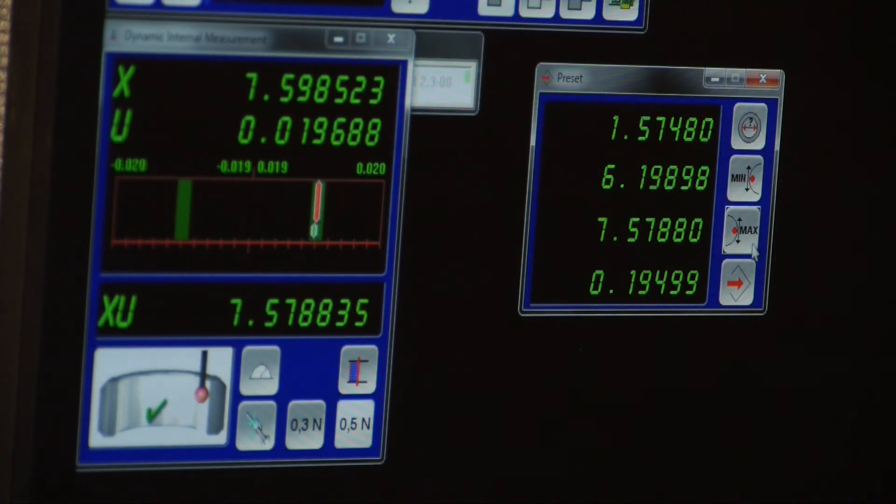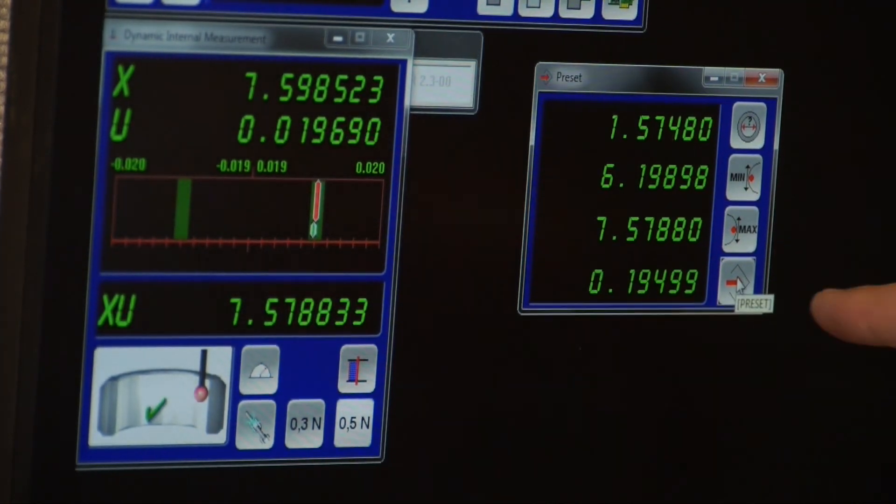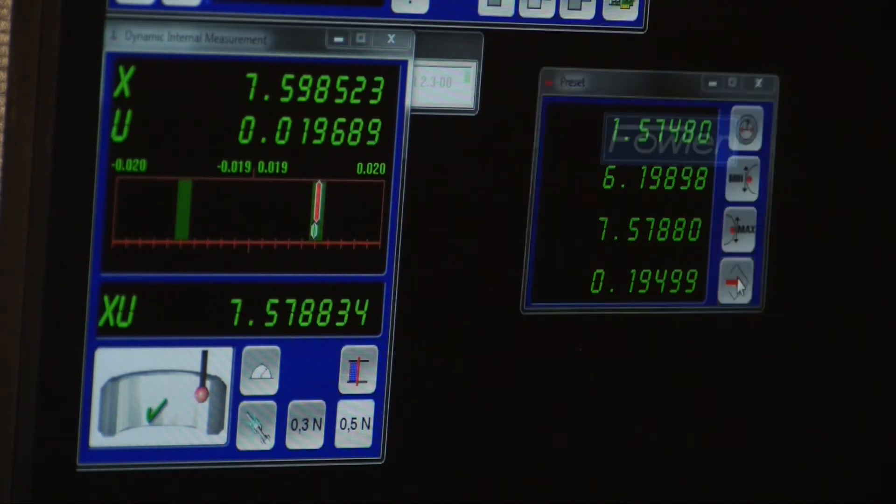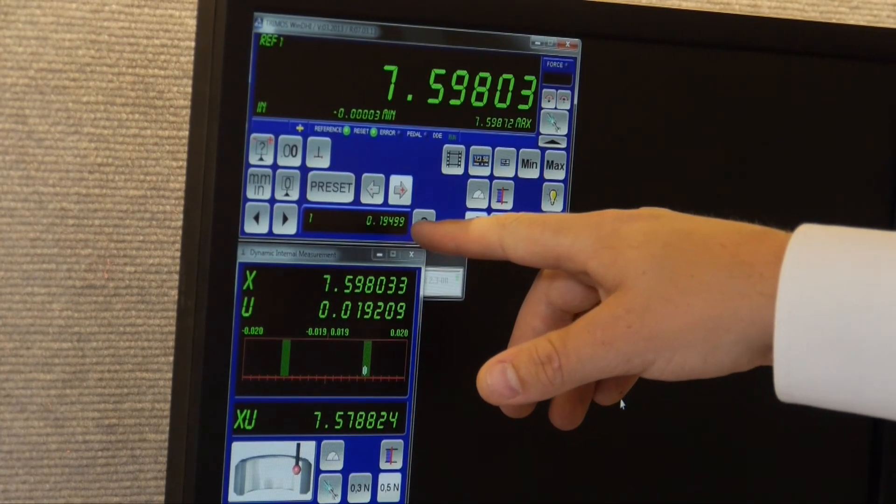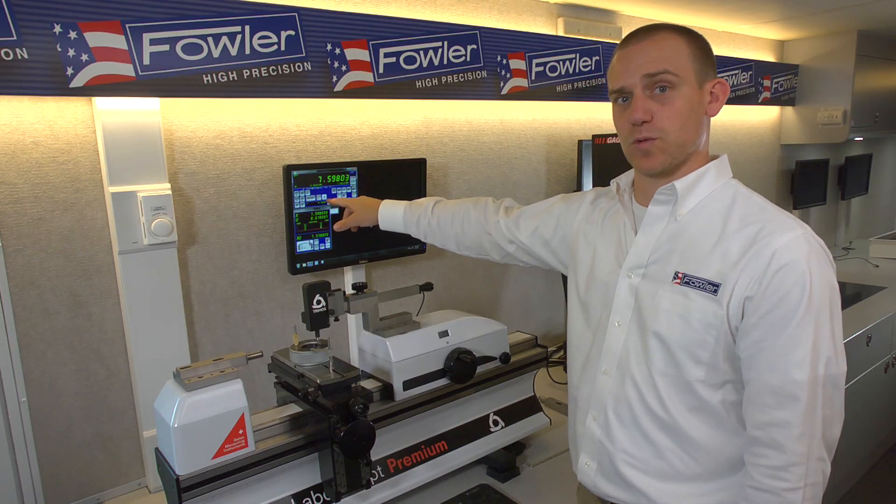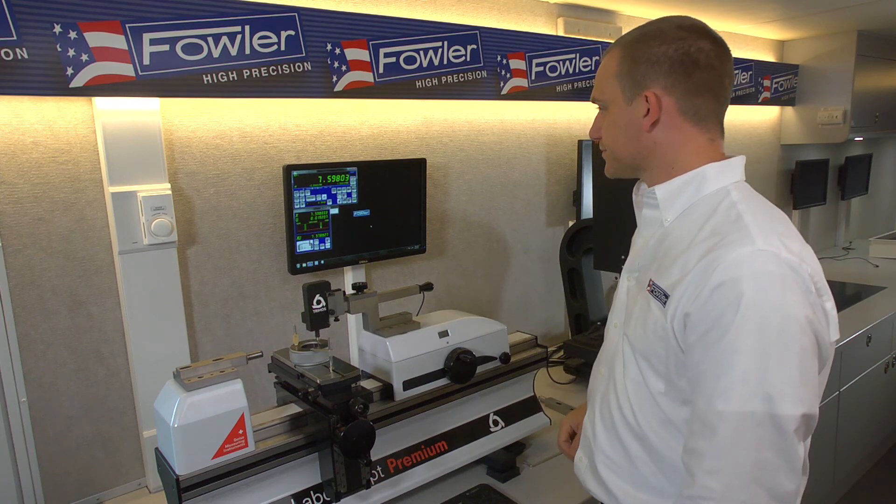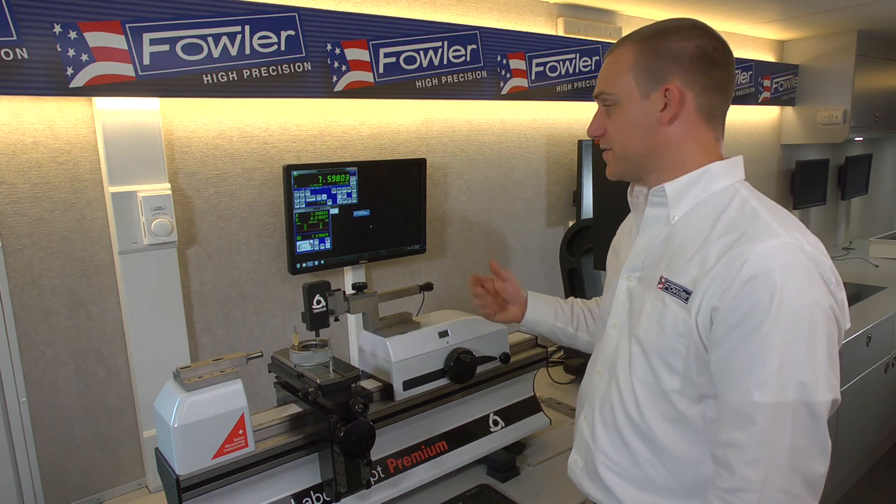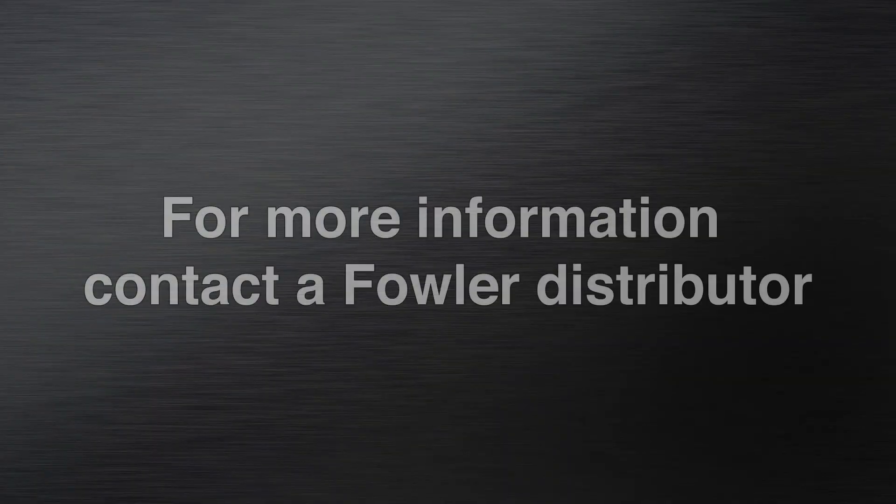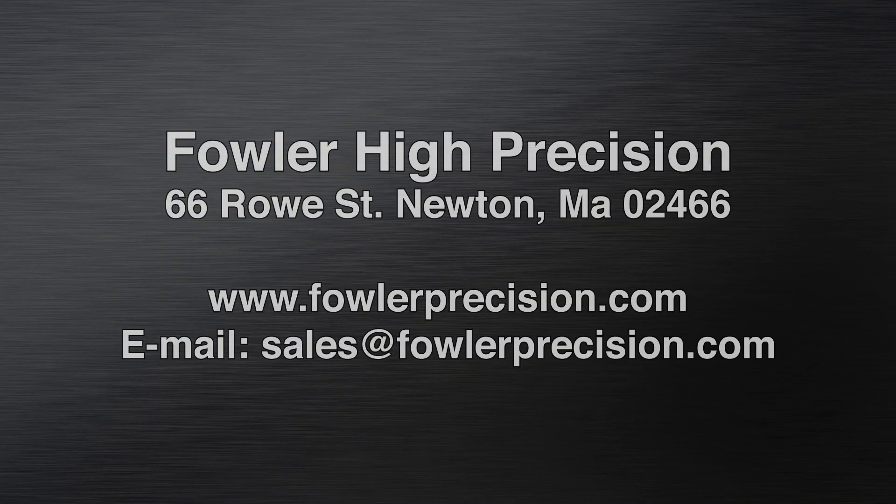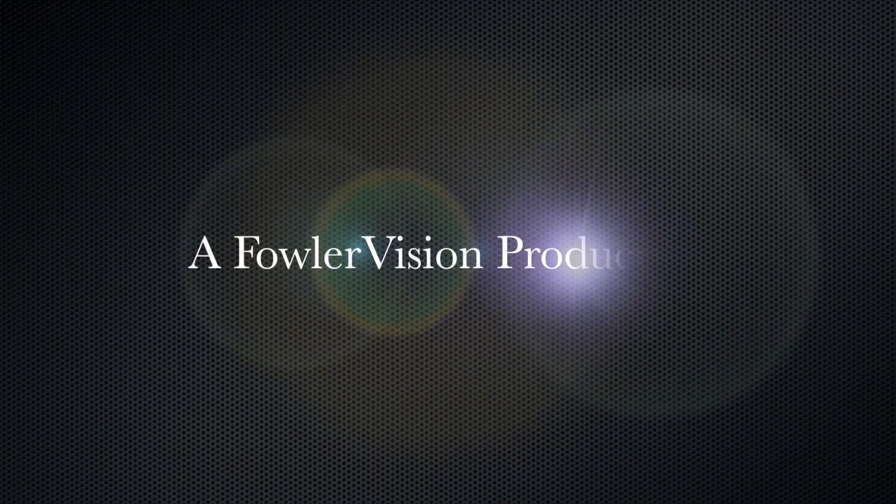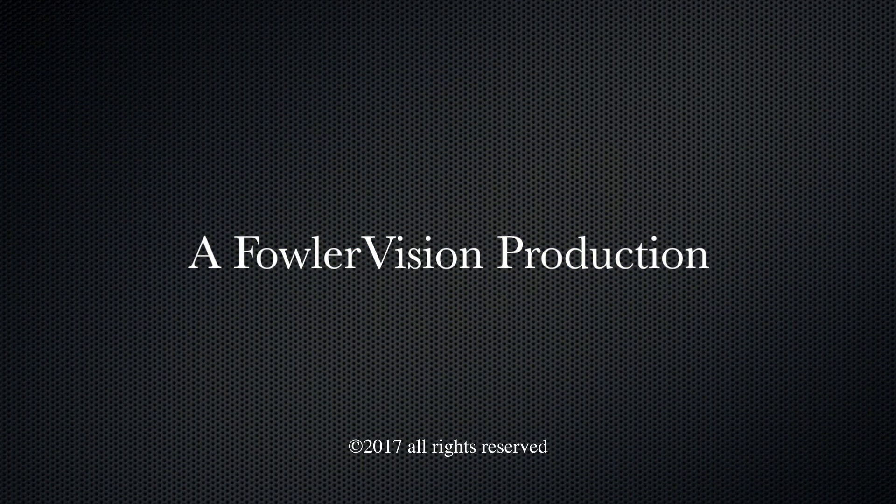So if we come down and hit the bottom right button here, you get a little pop-up that says preset. That will take that value and lock it in as our preset value. So that locks it in as preset number one. Once we have our probe constant locked in as a preset, now we can measure a ring.